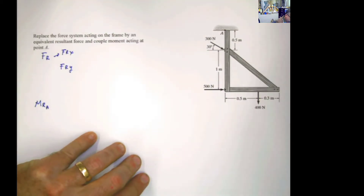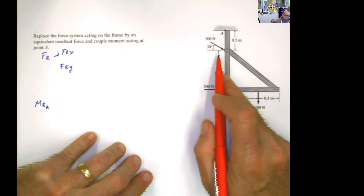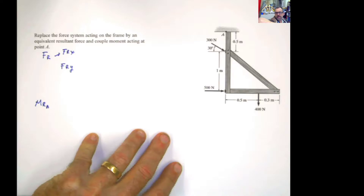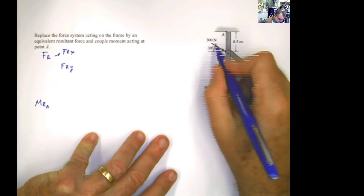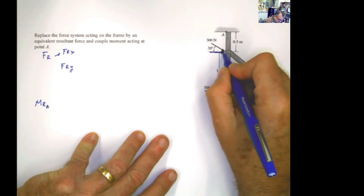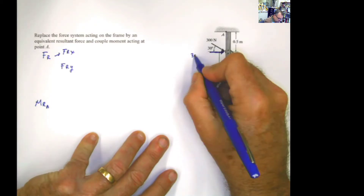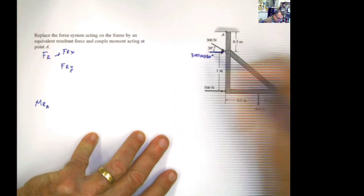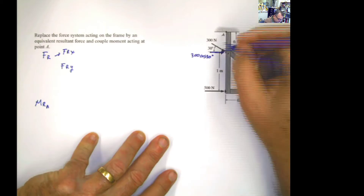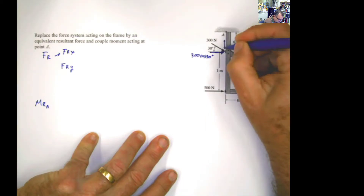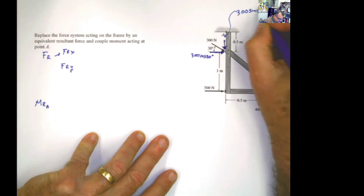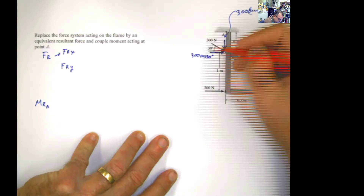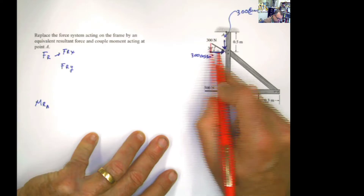Starting with the summation of forces in x, this force is inclined, so I need to find the components. The horizontal component is going to be 300 cosine of 30 — because it is adjacent to the angle. And I have a vertical component which is going to be 300 sine of 30 degrees, because that component is opposite to the angle.